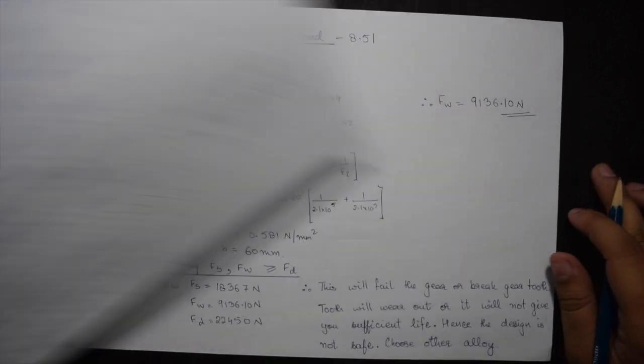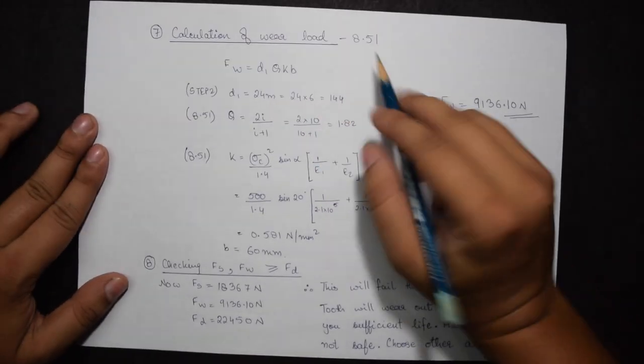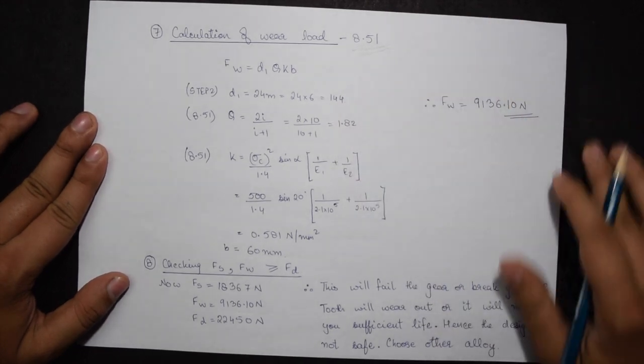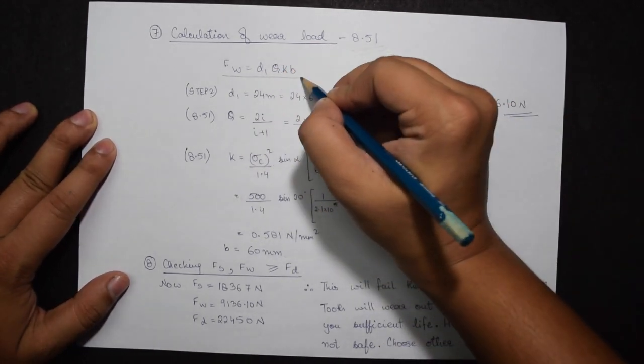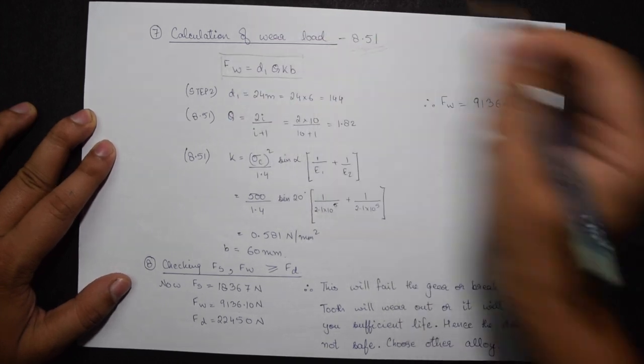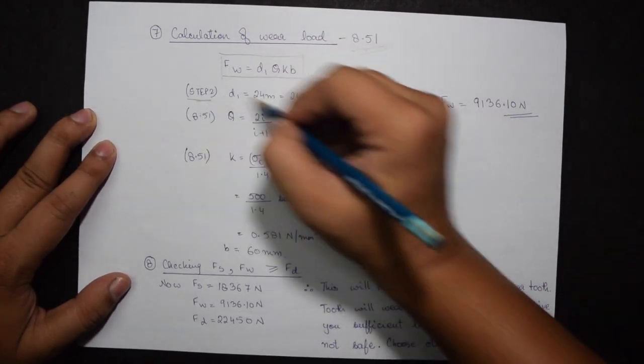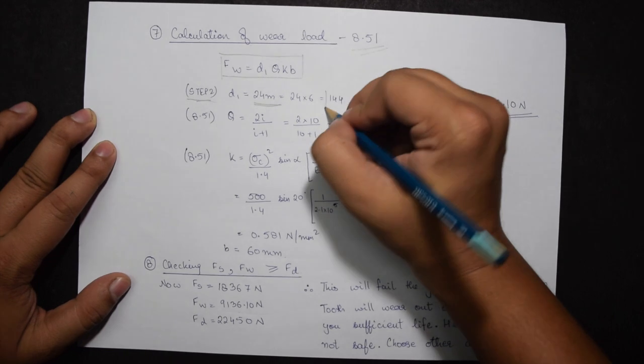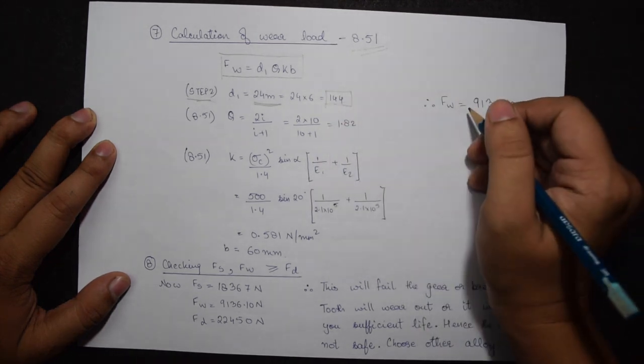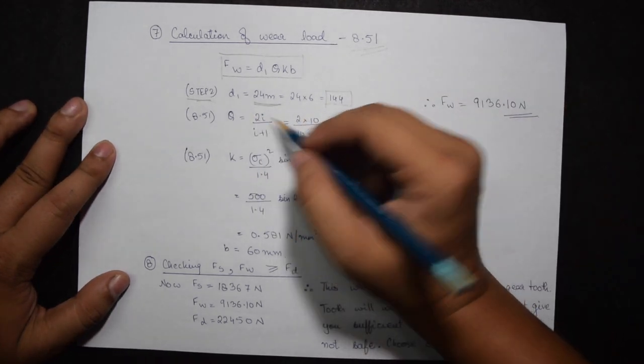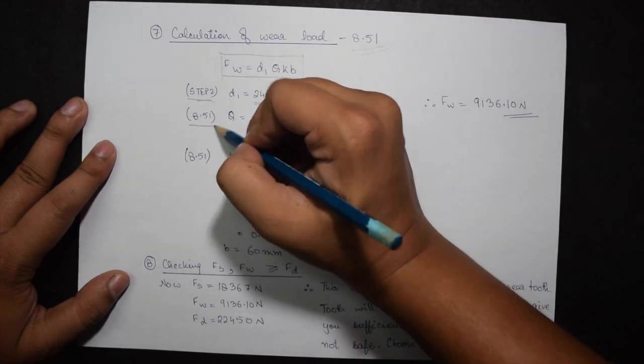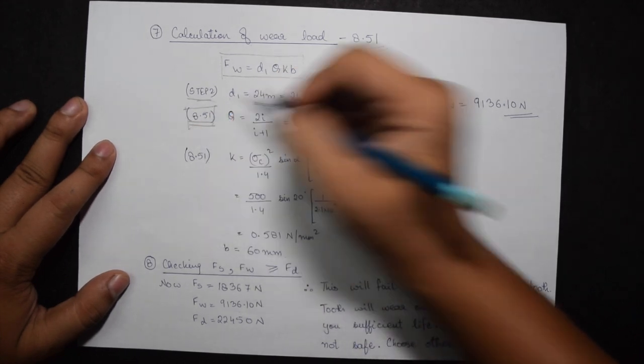Finally I have to calculate the wear load which is given on page 8.51. FW equals D1 Q K B. D1 from step 2 is 24 times M, that becomes 144. The value of Q can be obtained from the top of this page itself. Q equals 2i upon i plus 1.